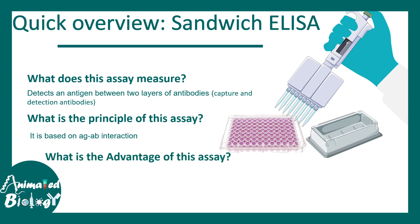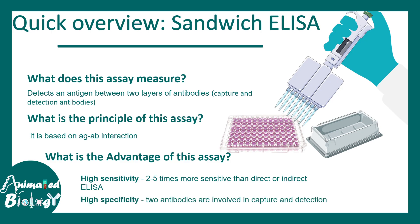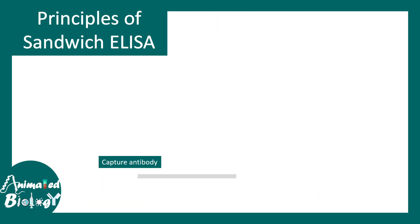The advantage of sandwich ELISA is that it is highly sensitive — two to five times more sensitive than direct or indirect versions of ELISA. It is also highly specific because it uses two types of antibodies: capture and detection antibodies. In a moment we will learn more about the principles of sandwich ELISA.